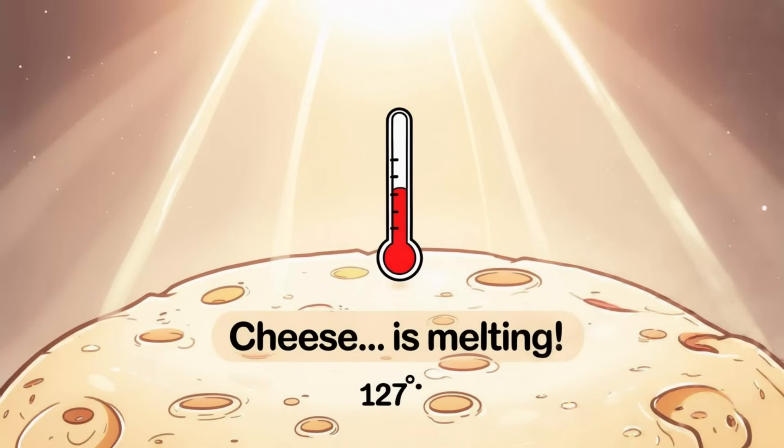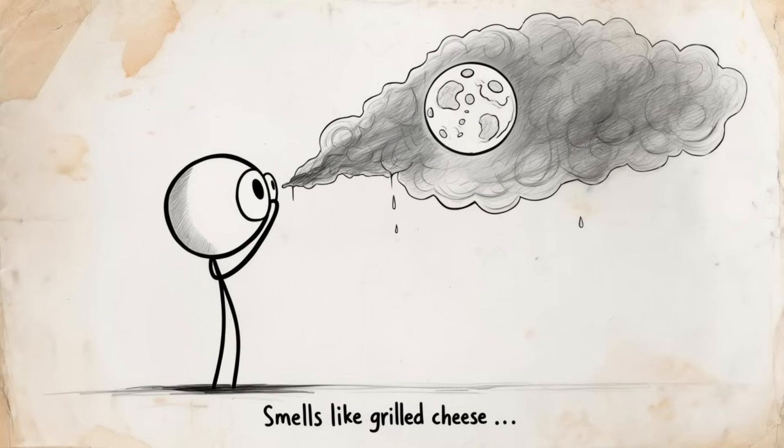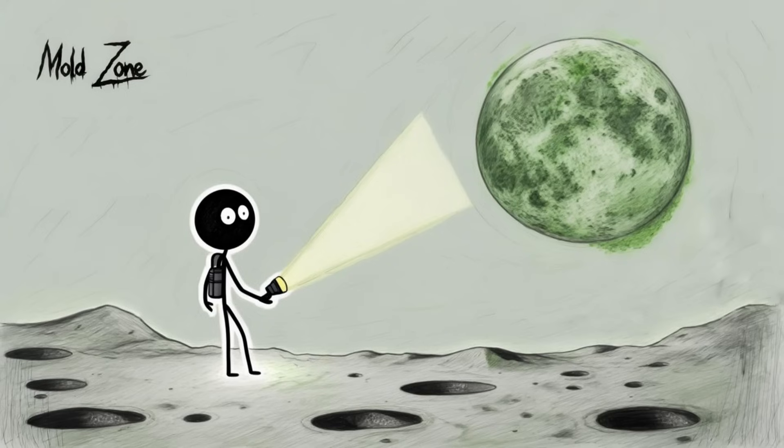Then comes the sun. The moon gets very hot during its day, up to 127 degrees Celsius. That's enough to bake most cheeses into bubbling puddles. So we'd end up with a moon that sizzles on one side, possibly releasing a fine mist of cosmic fondue. The smell? The night sky might permanently reek like a burning grilled cheese sandwich. Let's not even talk about the moon's dark side. That's where the mold would grow.